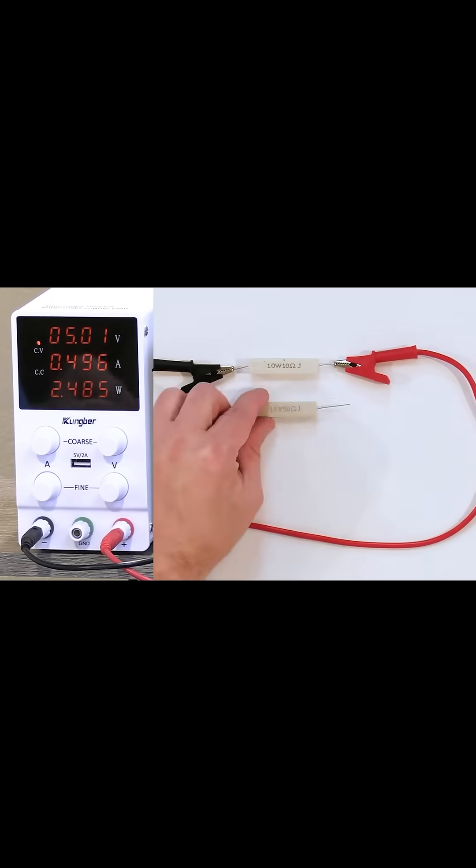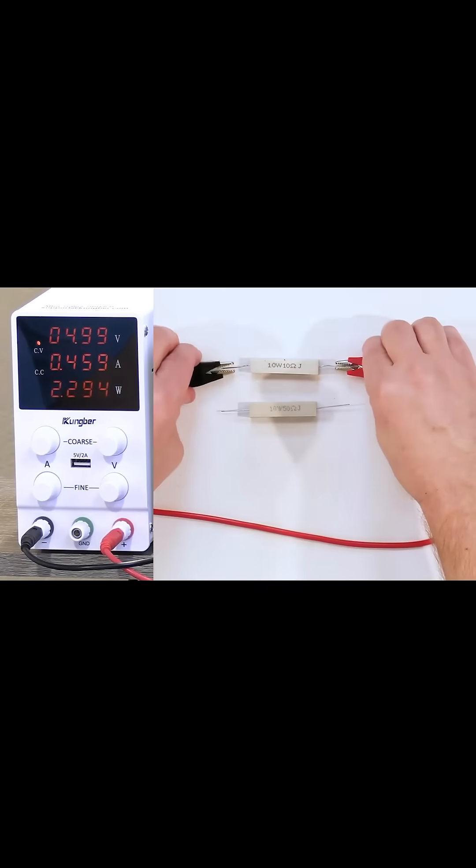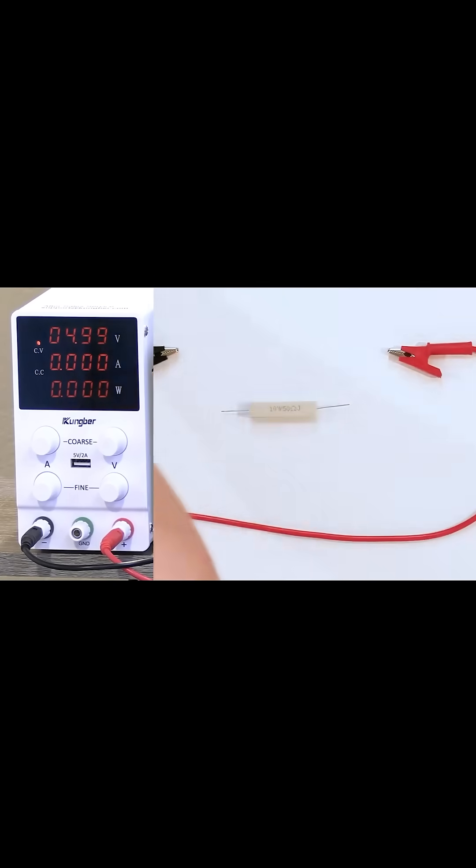I have a 50-ohm resistor. That means, so here, what's currently flowing is 10, or what's in the circuit is 10 ohms. If I swap it out, I'll just disconnect it here, and I'll swap it out for a resistor that's five times larger.